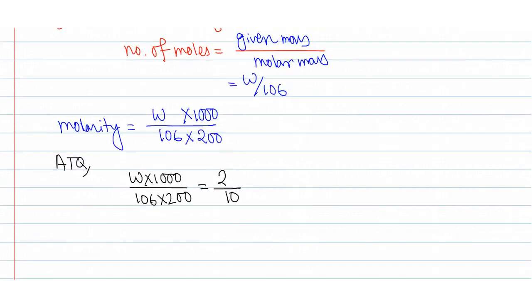Let's calculate. It will come 5. So W equals 2 times 106 by 10 times 5.